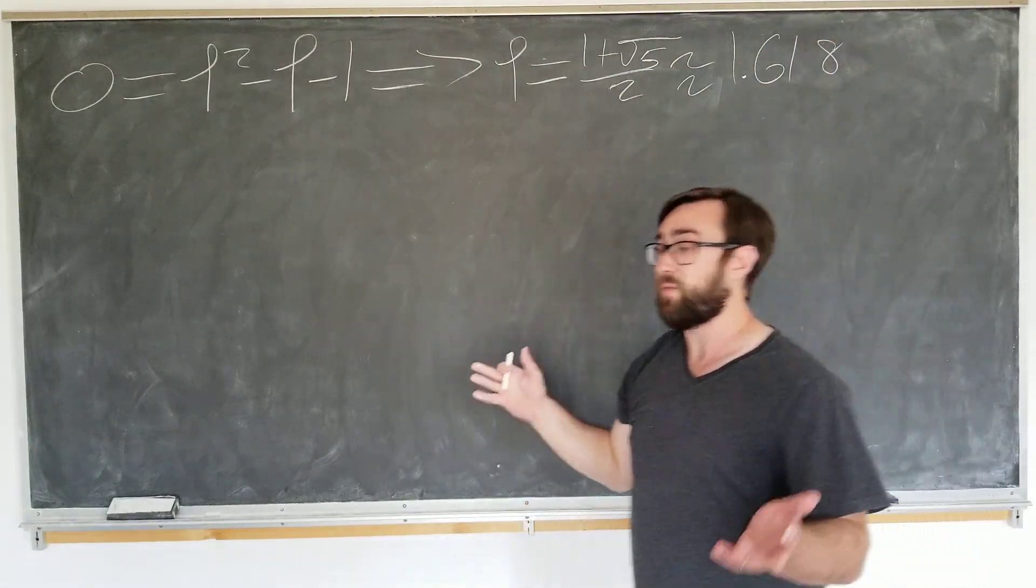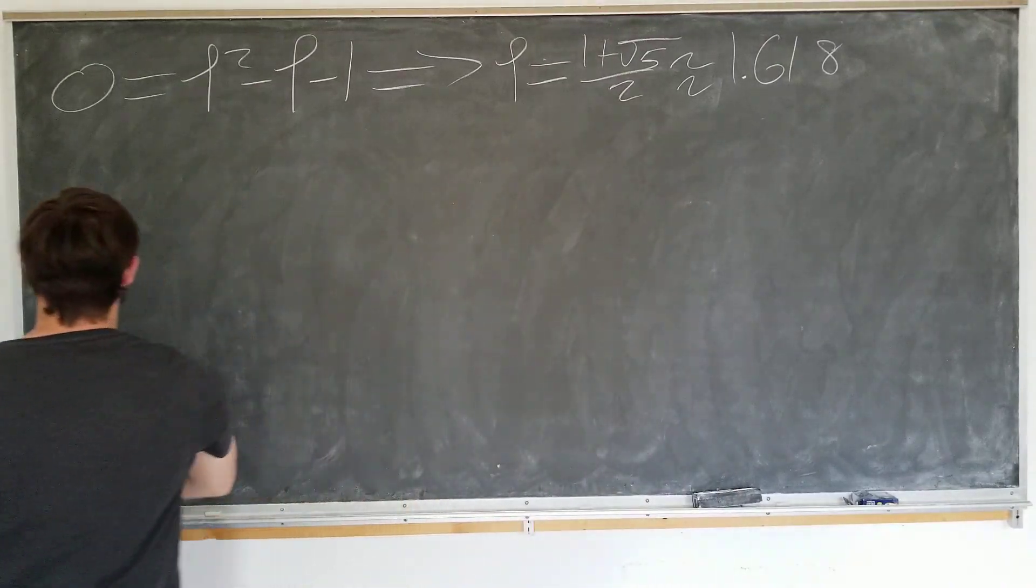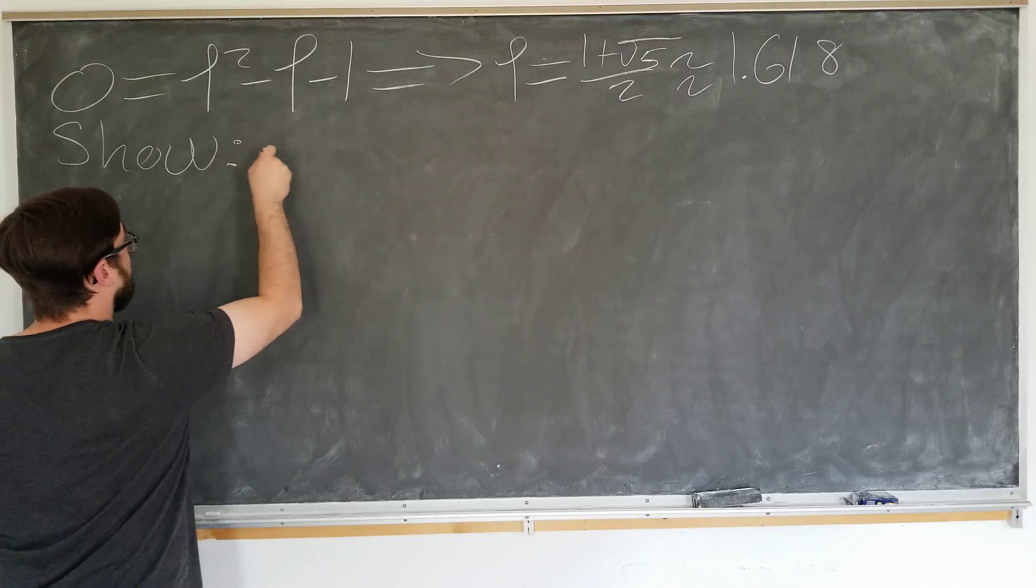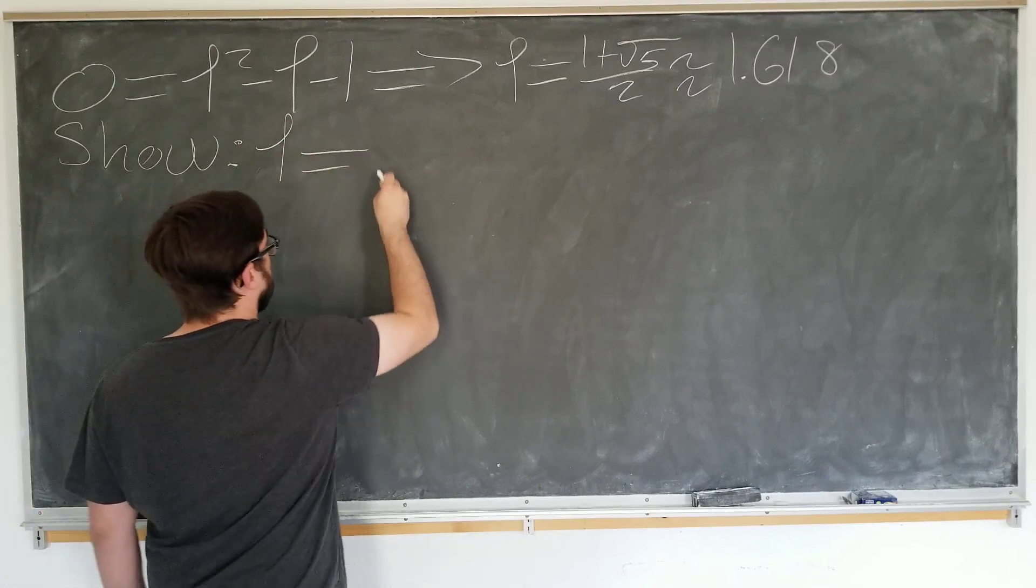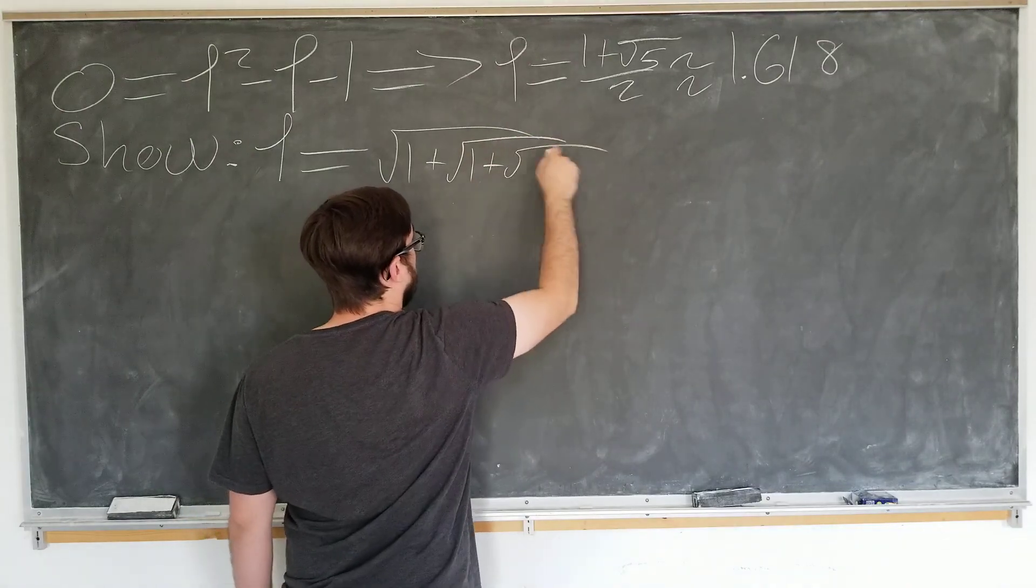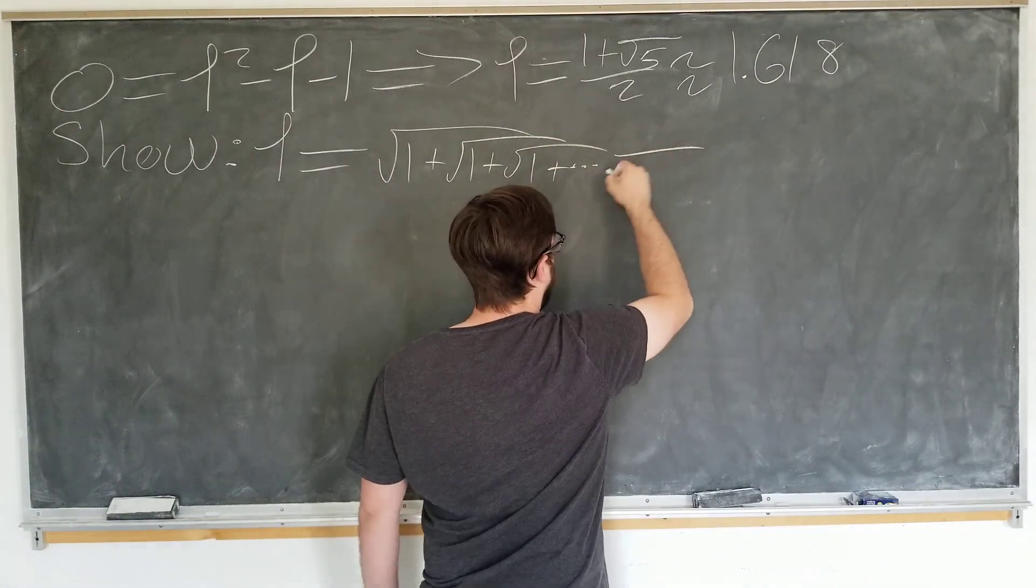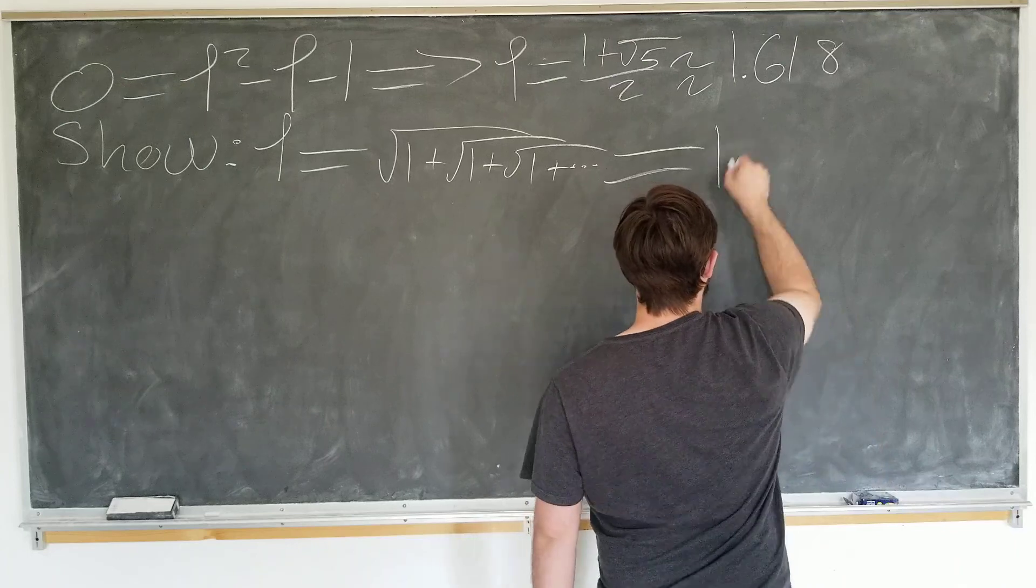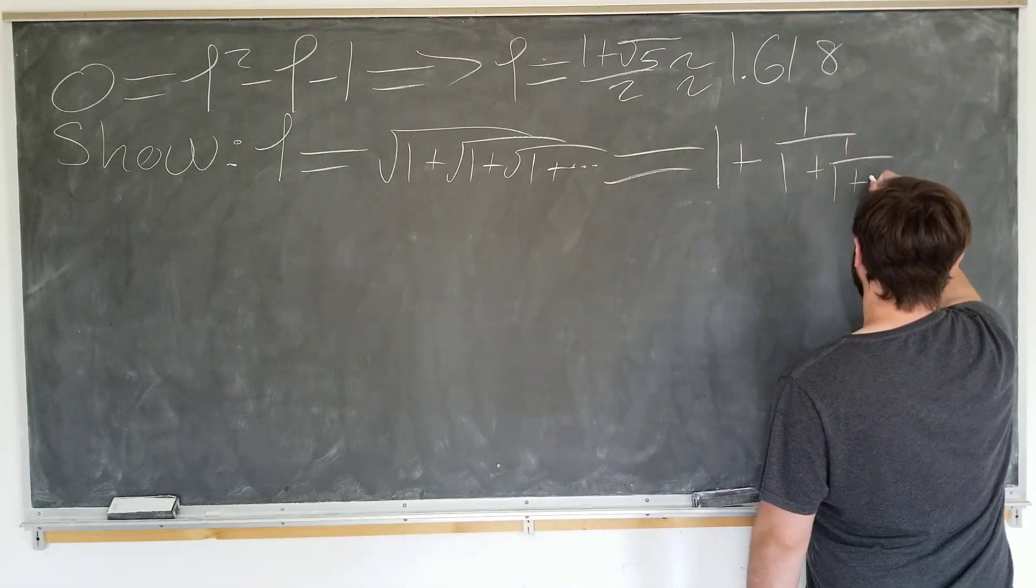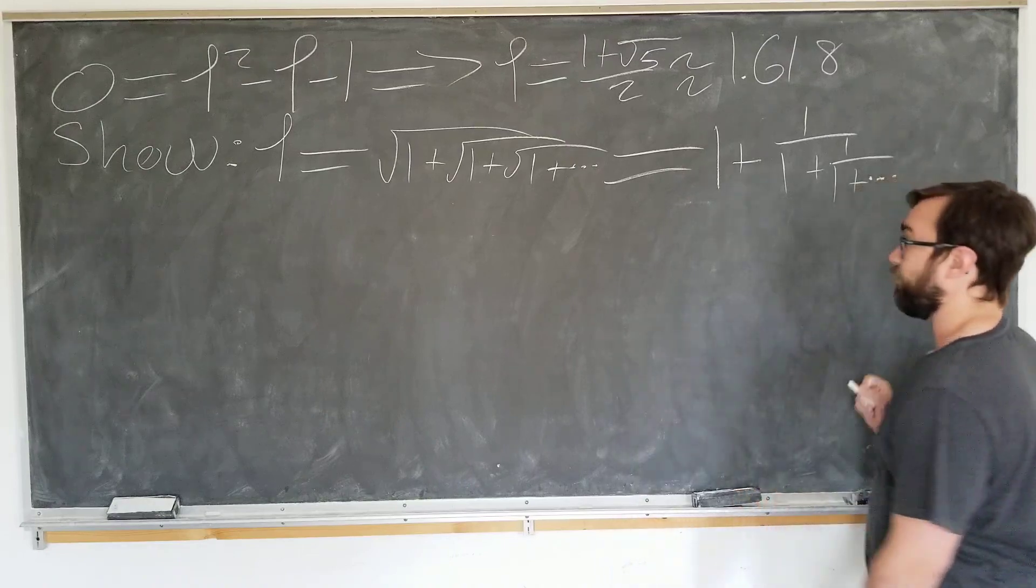We're going to derive a few important formulae about the golden ratio. We'll be showing today the golden ratio is equal to the square root of 1 plus the square root of 1 plus the square root of 1 plus going on forever. And it's also equal to 1 plus 1 over 1 plus 1 over 1 plus dot dot dot, also going on forever.